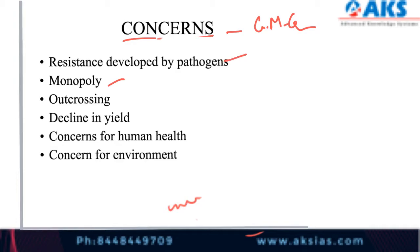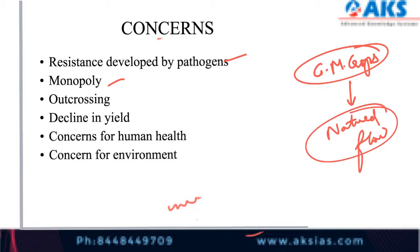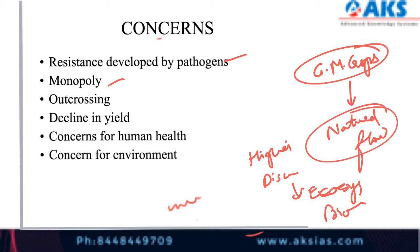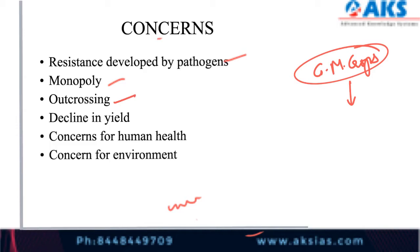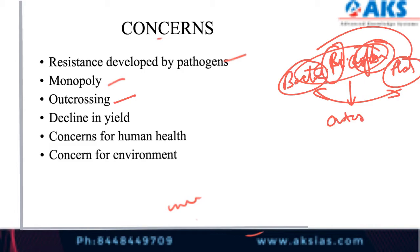The next concern is monopoly. If you are only using genetically modified crops, the natural flow of crops gets disrupted. This imposes high risks for disruption of our ecosystem and biodiversity, because the better traits produced from engineered genes can be favorable only to one organism, so gene flow is reduced.